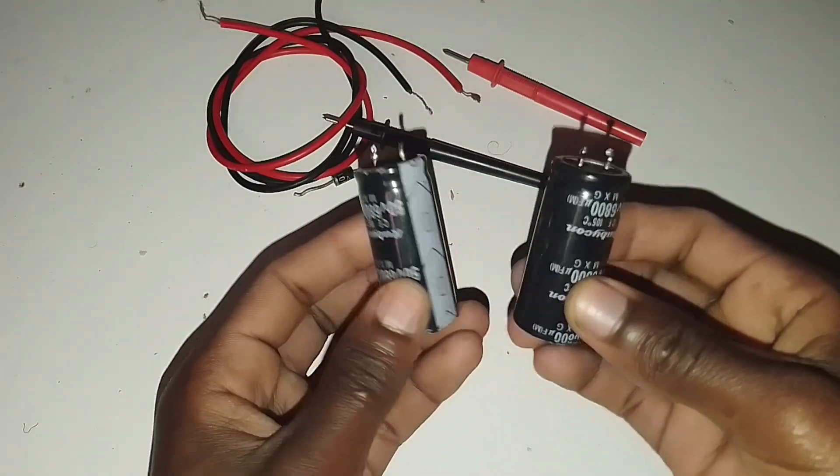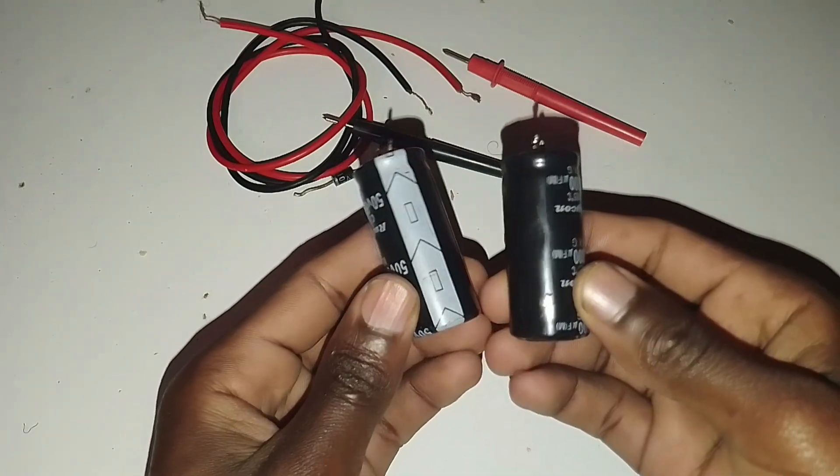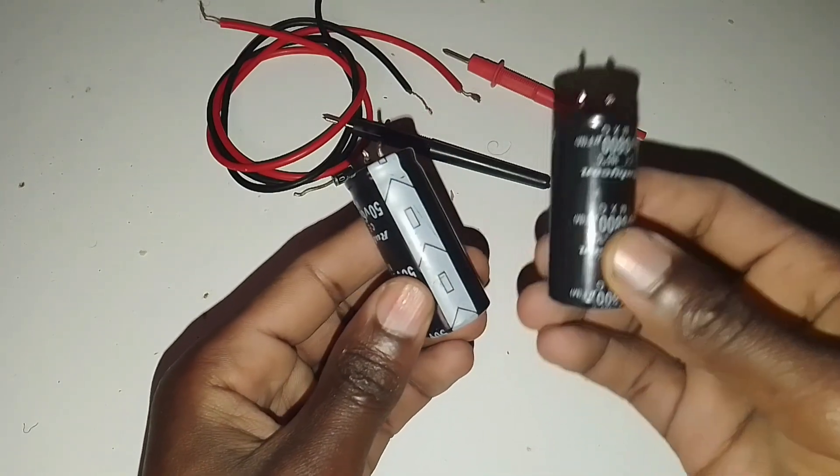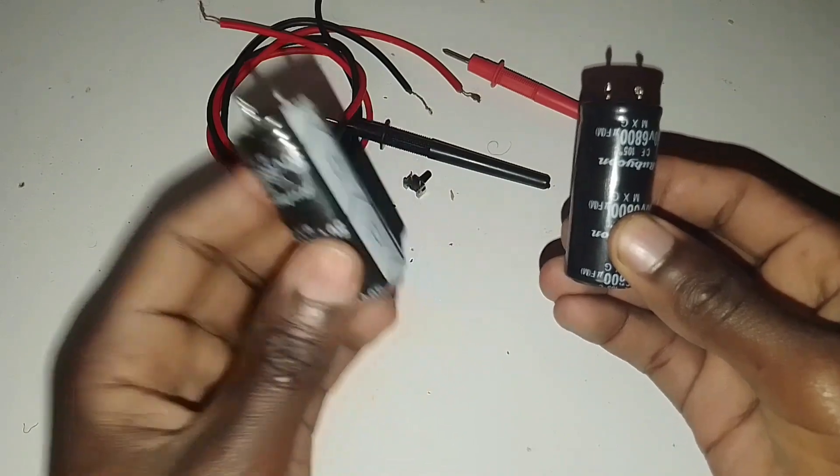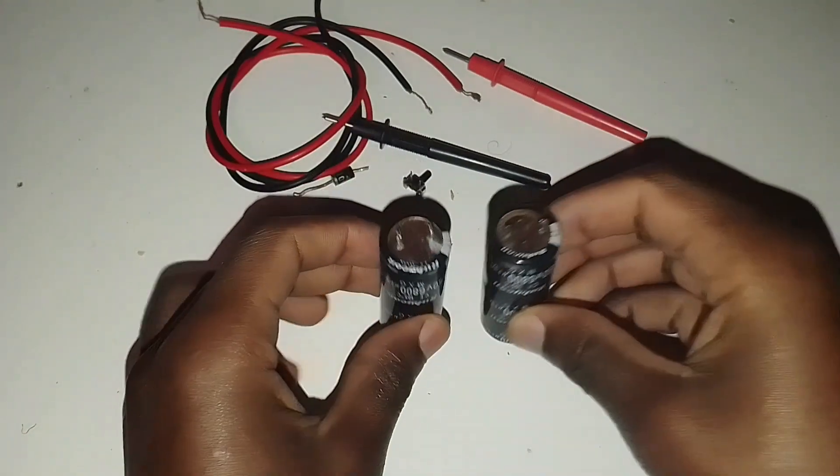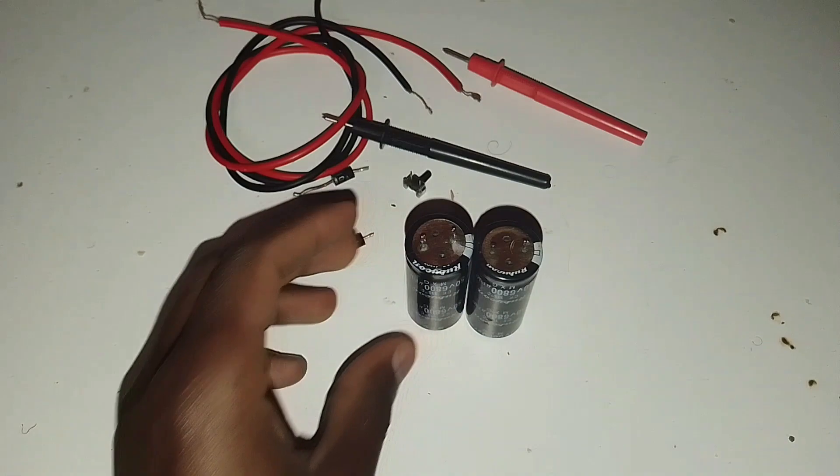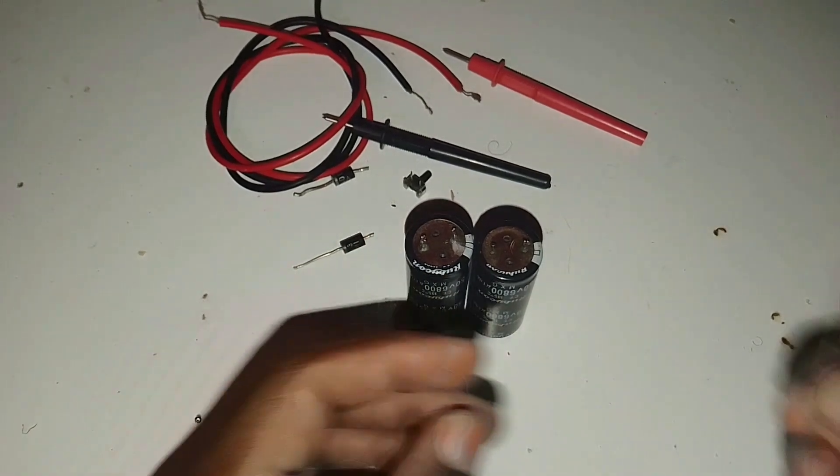First step will be connecting these two capacitors in series. We'll need to connect the positive of this one capacitor to the negative of the other capacitor. I will be using this jumper wire here.